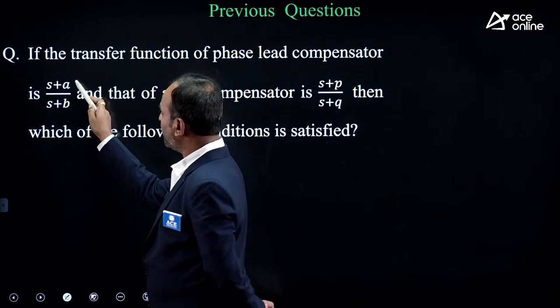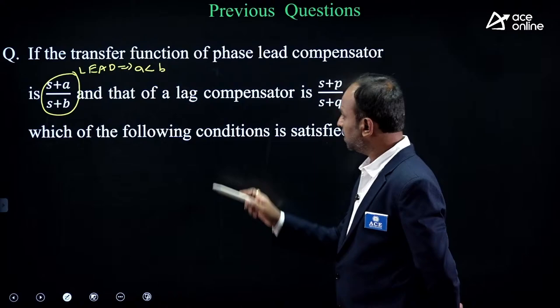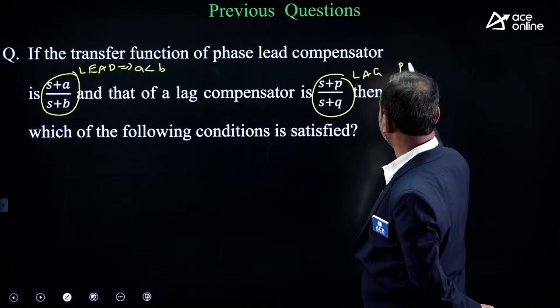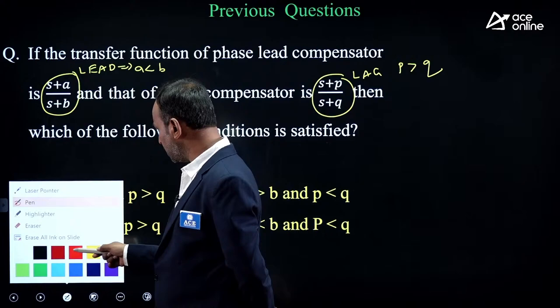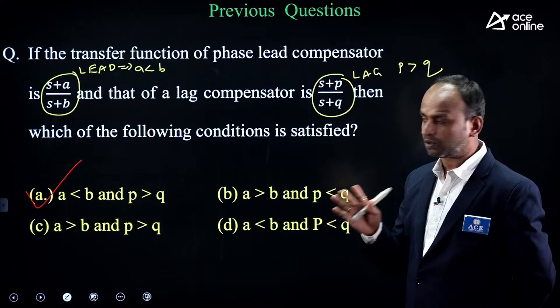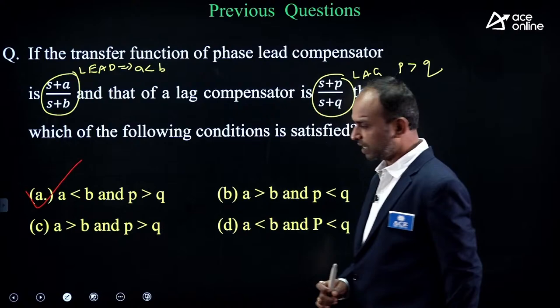Transfer function (S+A)/(S+B): it is a lead component when A < B (numerator less than denominator). It is a lag component when A > B (numerator greater than denominator). This is the condition for lead and lag compensators. Option A is correct. This is a very repeated question — seven stars importance.